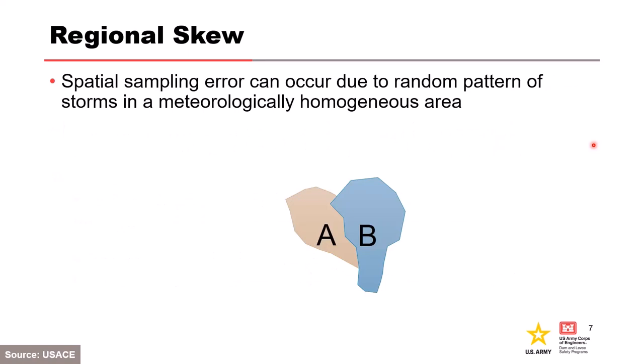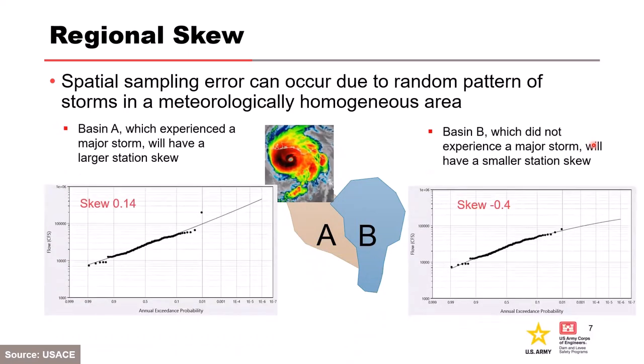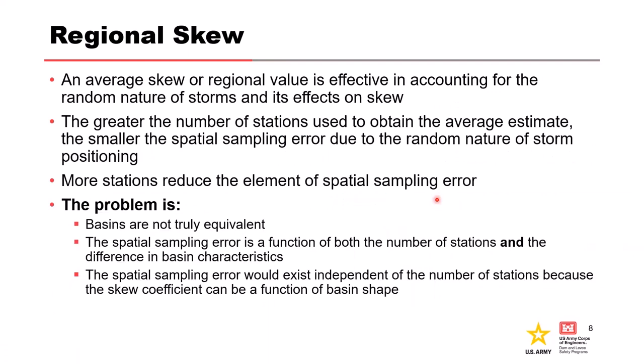Consider two equivalent basins in the same region where a major storm passes over only one of them during the period of record. The computed skew coefficient for the two basins will be very different because of the random positioning of the storm — basin A will have a much larger skew because it got that large storm compared to basin B. An average or regional skew value is effective in accounting for the random nature of storms. The greater number of stations used, the smaller the spatial sampling error. However, the basins are never truly equivalent and spatial sampling error is also a function of the difference in basin characteristics — the skew coefficient can be a function of the properties of the basin itself.